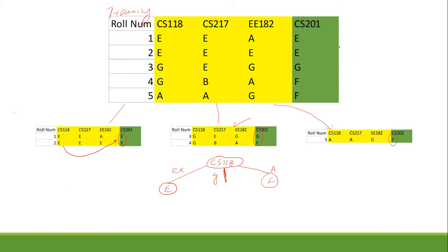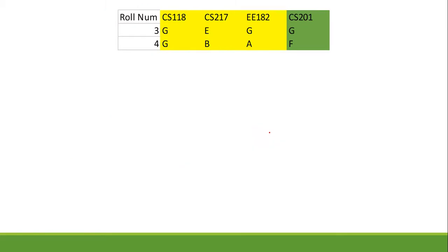For the next step we repeat the same process on this impure partition as we did for the original dataset. We have another decision to make on this branch. We cannot pick cs118 again as the partition attribute, because all values in that column are already G — reusing it would not improve the purity of the labels. So we have to choose from the remaining two columns: x2 and x3.